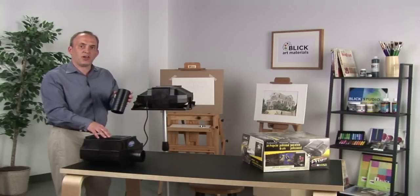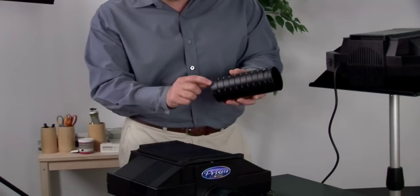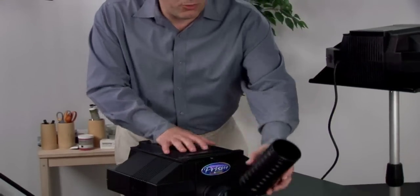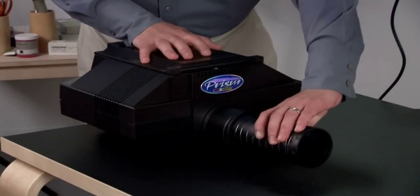The PRISM projector comes with a single element lens. This lens can be used for both enlarging and reducing the image. There's a little graphic on the outside of the lens to help you determine which orientation you'll want to use for enlarging or reducing the image.